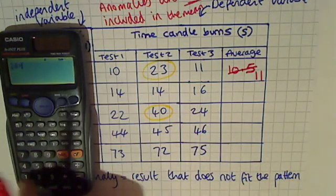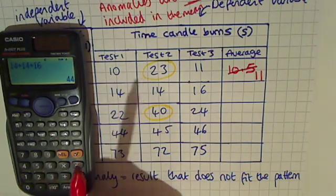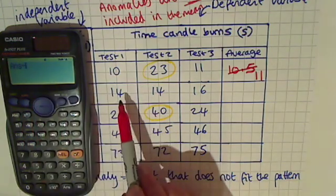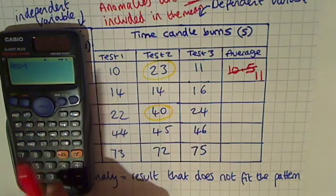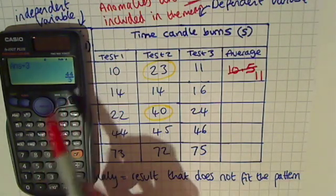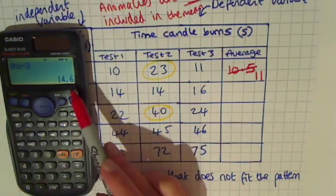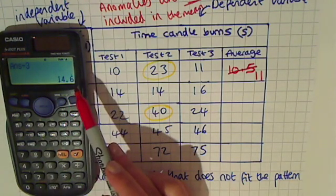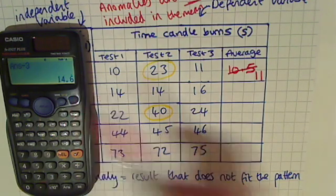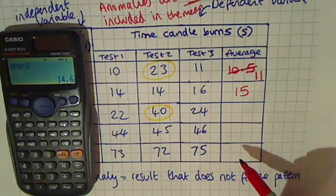So now we need to do the average for this row. We do 14 plus 14 plus 16 equals 44, then divide by three because this time we've used three numbers. And again, we get this fraction, so we need to use the SD button. Our answer is 14.6. Because the number after the decimal point is higher than five, we round up to an average of 15 in this case.